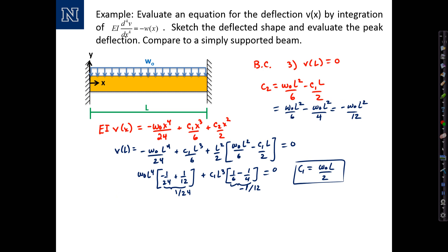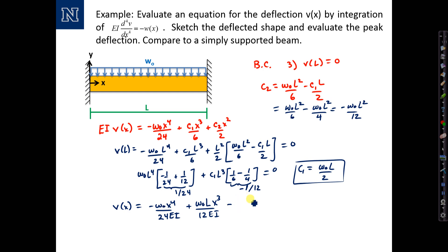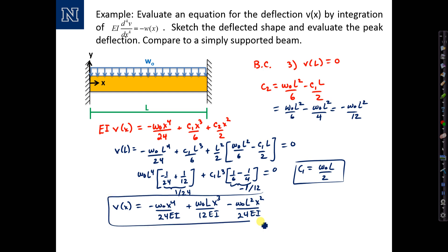The last step is to summarize: V(x) equals — dividing through by EI — negative W-naught·x⁴/(24EI), plus W-naught·L·x³/(12EI), minus W-naught·L²·x²/(24EI). This is our equation for V(x).